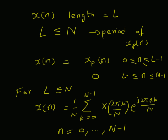Thus, we can extract the original sequence x(n) from the sampled version of the DTFT, provided its length L is less than or equal to the period N of the signal x_p(n).